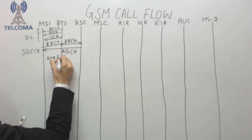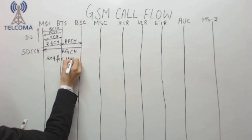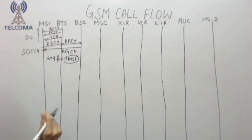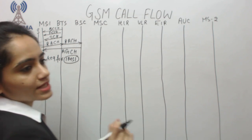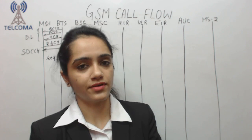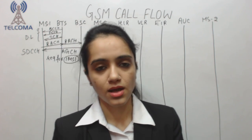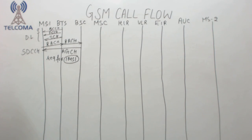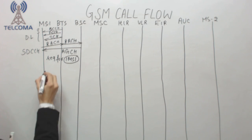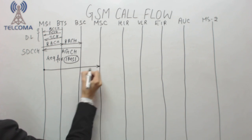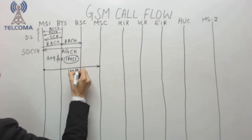Over the SDCCH, there is a message request for the IMSI — the International Mobile Subscriber Identity. The IMSI is stored in the SIM card and uniquely identifies the subscriber. The mobile station sends its IMSI, which travels through the BSC and reaches the MSC.